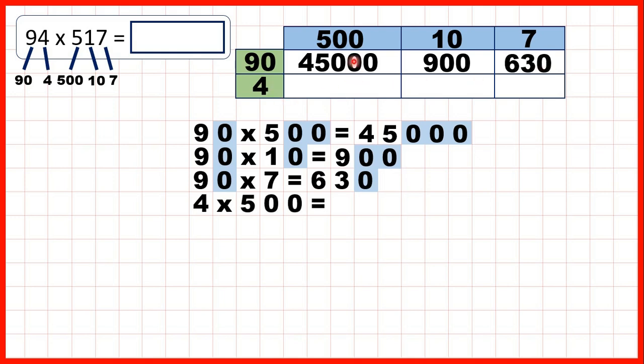Here we need 4 times 500. That's 2,000 because 4 times 5 is 20. But then we need two end zeros after the 20, two end zeros after we've written our answer to 4 times 5.